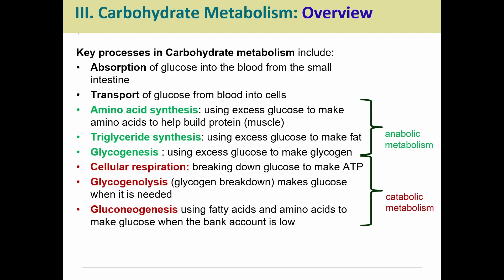Some key things are absorption — you have to bring glucose into the bloodstream through your small intestines from the food you eat. Then that has to get from the blood into your cells. We can use excess glucose to make amino acids to build protein, use the triglyceride synthesis pathway to make fats, use glucose to make glycogen through glycogenesis, and cell respiration to use glucose to make ATP. Then there's glycogenolysis to break glycogen down to make glucose, and gluconeogenesis, which uses fatty acids and amino acids — non-carbohydrate things — to make glucose when we don't have enough.